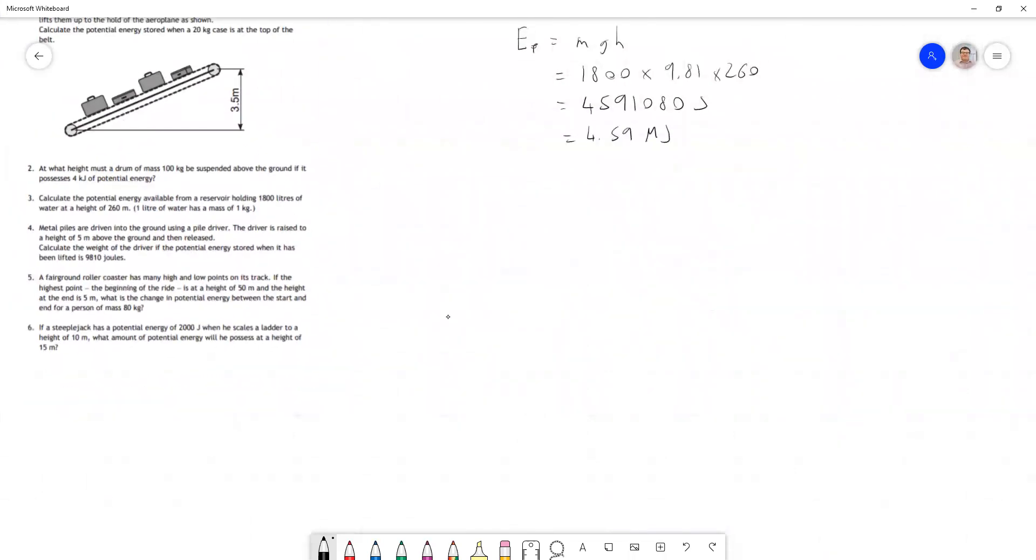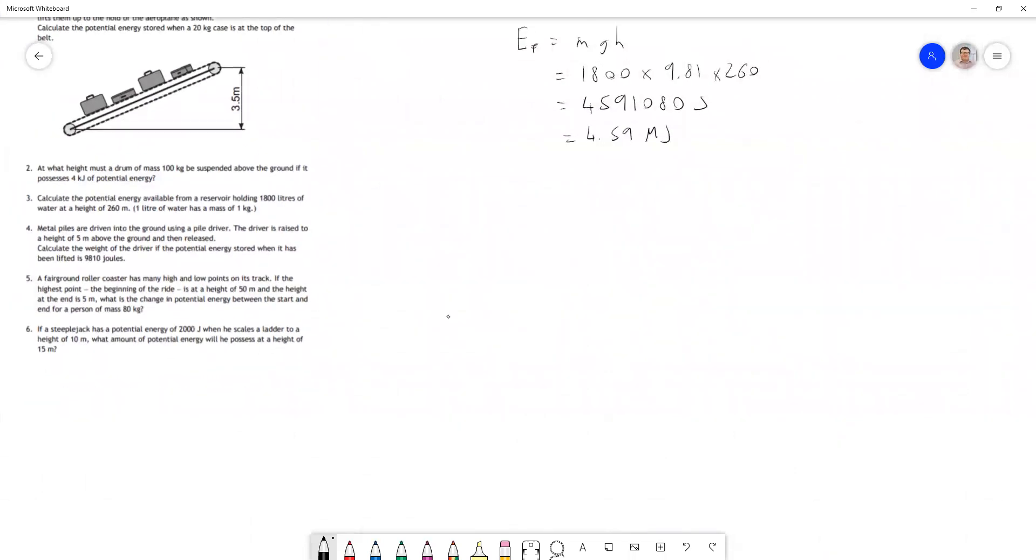Question four: Metal piles are driven into the ground using a pile driver. The driver is raised to a height of five meters above the ground and then released. Calculate the weight of the driver if the potential energy stored when lifted is 9810 joules. That number should look a little bit suspicious—981—there's a good reason for that.